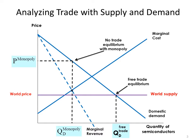Now, what happens when we have international free trade? Amazingly, the free trade equilibrium is exactly the same. What this means is that international free trade can force the monopolist to behave exactly as if it were a competitive industry. The only difference is that shifting from monopoly to free trade internationally, we get an even bigger welfare effect — much bigger gains from trade since the monopolist was producing a lot less than with the domestic competitive industry.